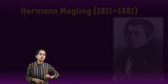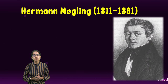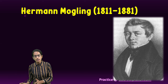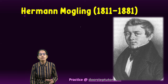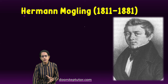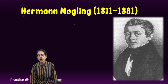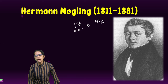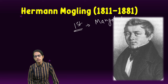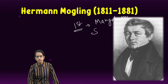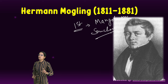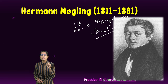The next was Herman Mogling, a German missionary who came and settled in Mangalore in Karnataka. He was well versed in Kannada literature, and he founded the first Kannada newspaper, known as the Mangaluru Samachar.